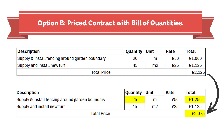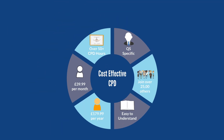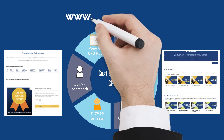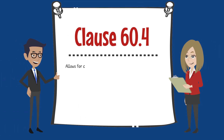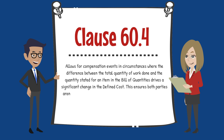Well, not always. Clause 60.4 allows for compensation events in circumstances where the difference between the total quantity of work done and the quantity stated for an item in the bill of quantities drives a significant change in the defined cost. This ensures both parties aren't tied to a rate that no longer reflects the reality on site.